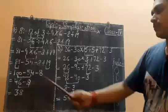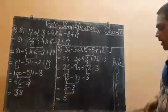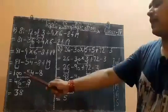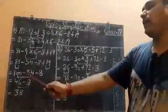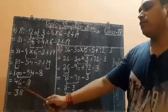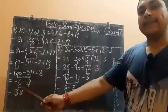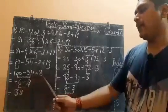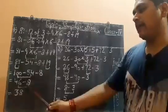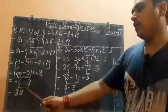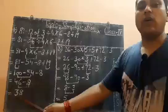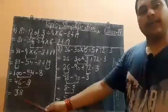Now the last part is subtraction. Subtract 100 minus 54, which will be 46, and minus 8 is copied down as it is. Now 46 minus 8 is 38. Our final answer is 38.